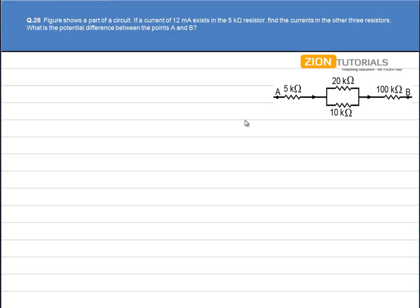The figure shows a part of the circuit. A current of 12mA exists in the 5kΩ resistor. So the current flowing through this resistor is 12mA.